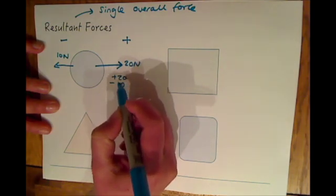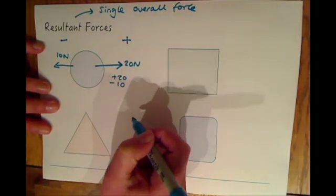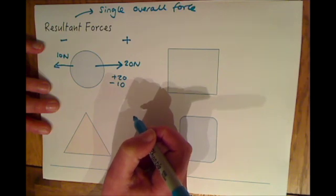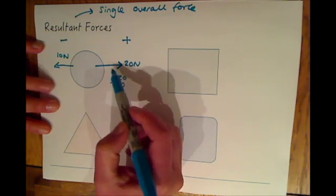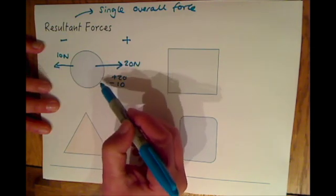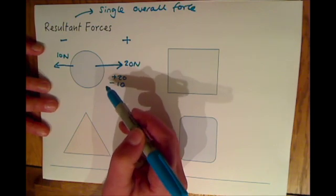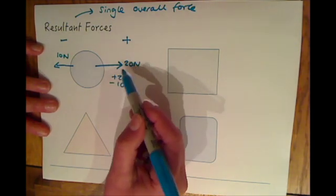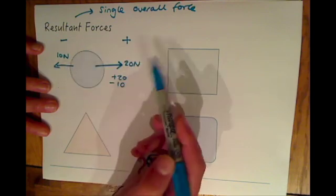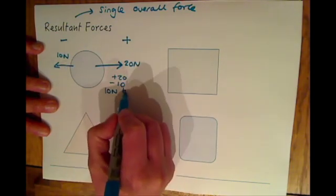So if we take 10 away from 20 we can work out our resultant force. That means taking these two forces into account to give a single overall force acting on the object. With 20 newtons to the right and 10 newtons to the left, you'll have an overall force to the right.